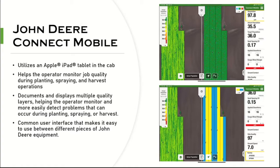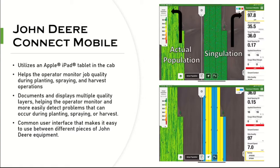It uses an Apple iPad tablet in the cab to help the operator monitor job quality during those operations, and it offers multiple quality layers, several of which are not available on the Green Star 3 2630 or on the Gen 4 4600 or 4640 displays. The app also offers a split-screen view that allows users to compare two quality layers at once in every operation, and it displays edge of paths and direction of travel indicators that make it easier to understand how the field has been driven.